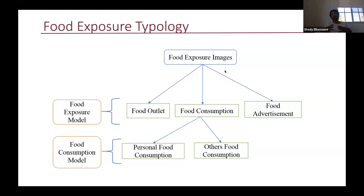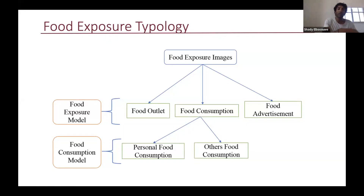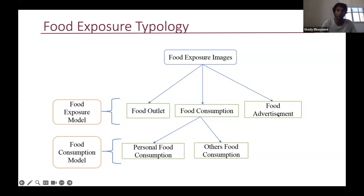We had 30,000 food-related images, but it would be really difficult for the nutritionist in our team to go through all of these. So we wanted to go a step further and classify these images into subclasses: food outlets, food consumption (meaning the child or someone else is eating something — further divided into personal food consumption and other food consumption), and advertisements. For each one of these category levels we have a different machine learning model.